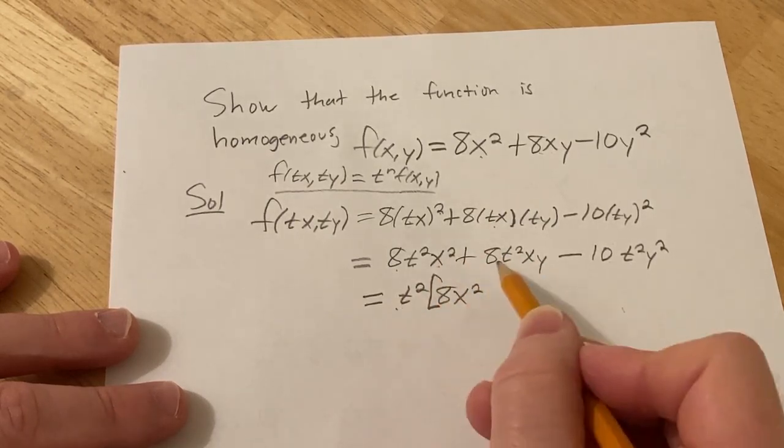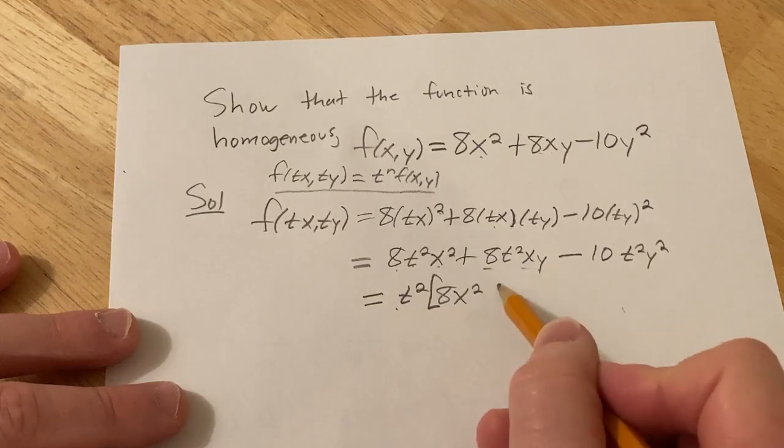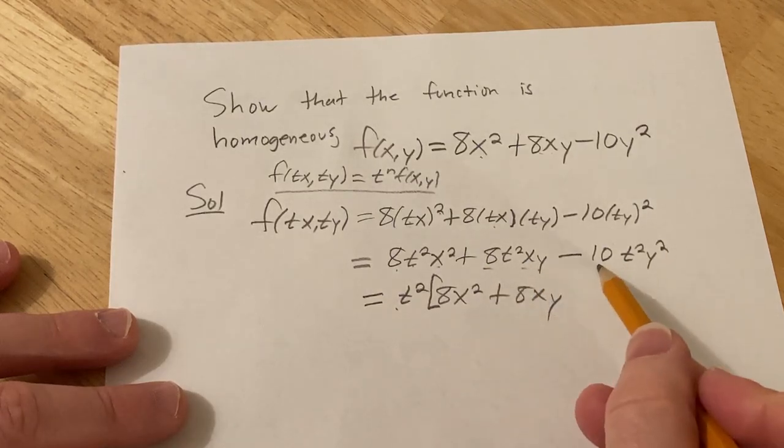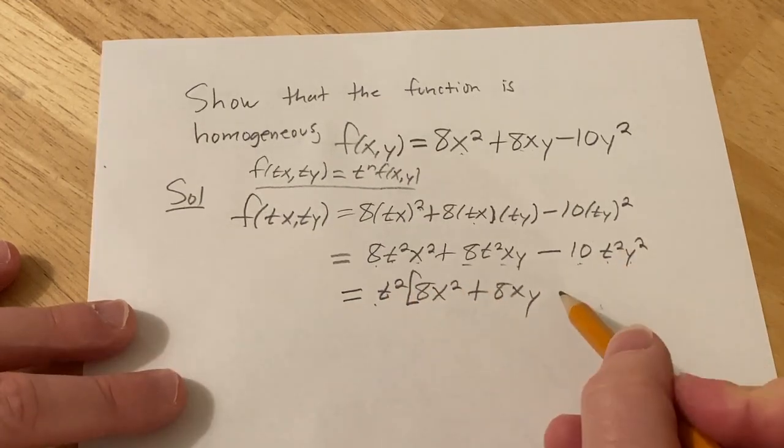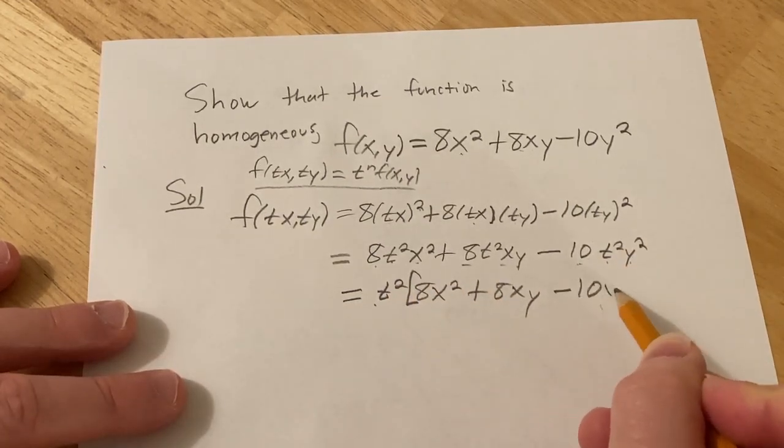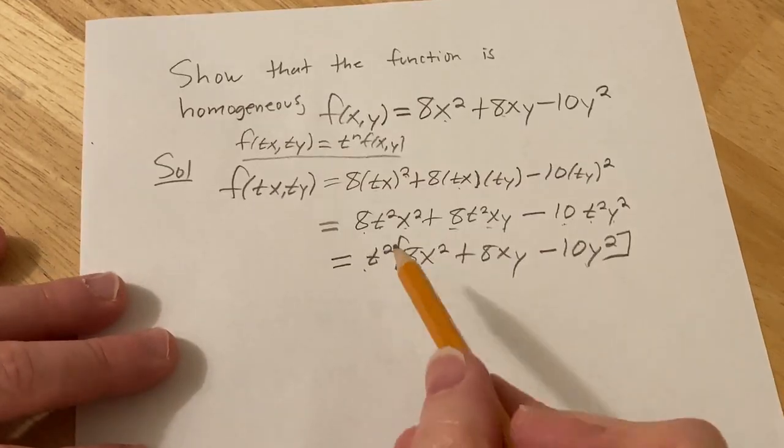What's missing here, you've already got a t squared, you just need an 8xy, so plus 8xy. And then here you have minus 10 t squared y squared and there's a t squared here so you just have minus 10 y squared, you can check that.